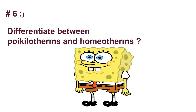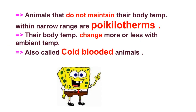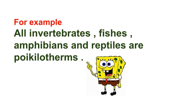Question number six: differentiate between poikilotherms and homeotherms. Animals that do not maintain their body temperature within a narrow range are poikilotherms. Their body temperature changes more or less with ambient temperature, so they are also known as cold-blooded animals. For example, all invertebrates, fishes, amphibians, and reptiles are poikilotherms.